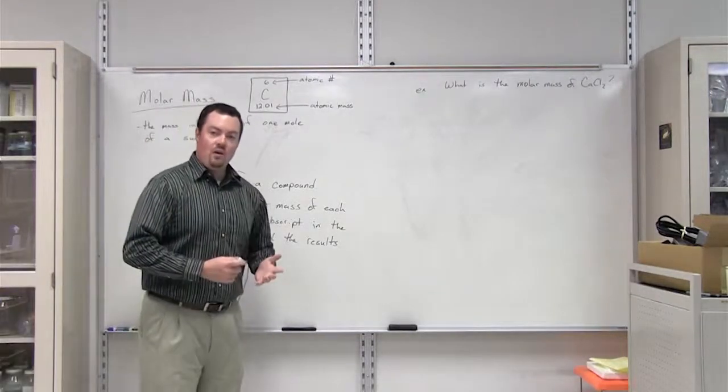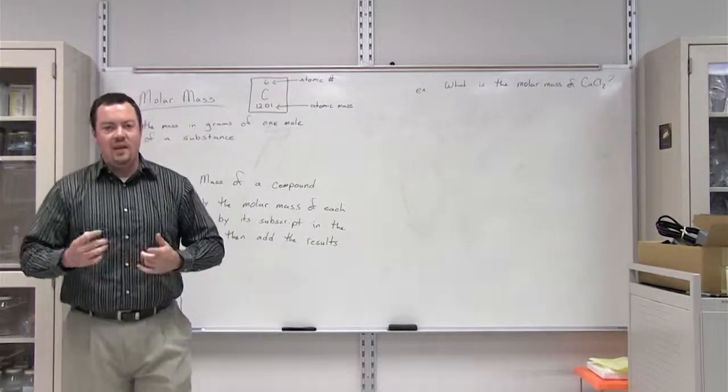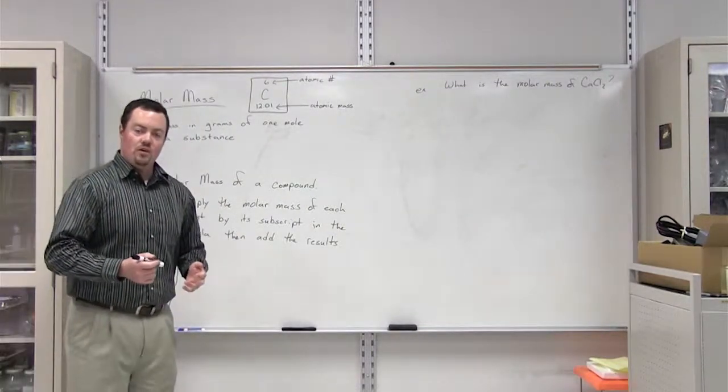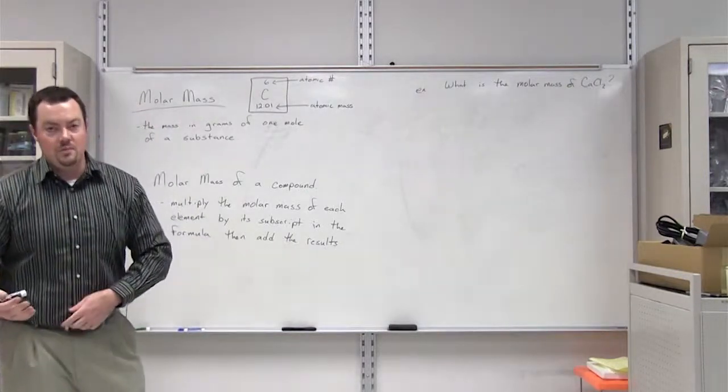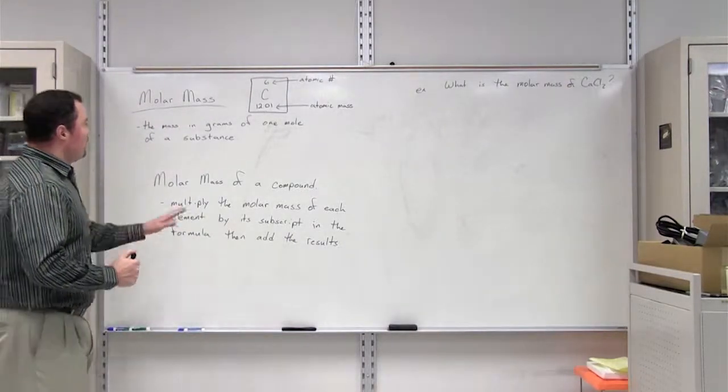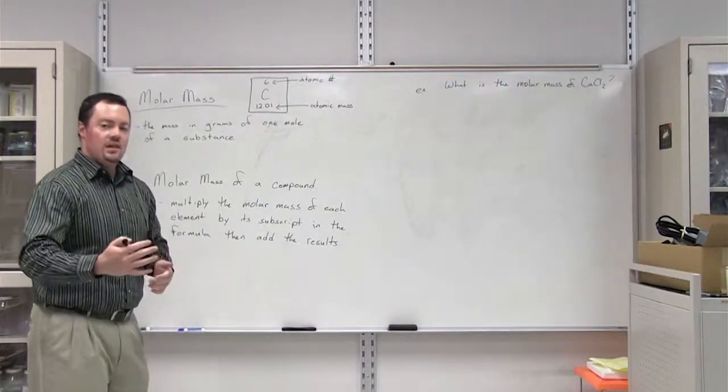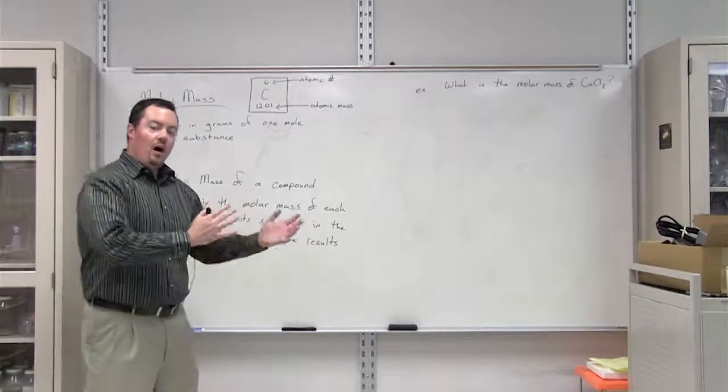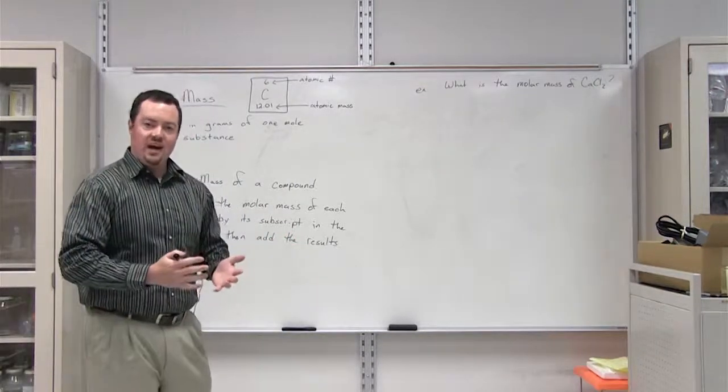Hopefully by now we know that one mole of any substance is equal to 6.02 times 10 to the 23rd of that particular substance. The molar mass is just taking this one step further and giving us a mass of one mole of these items.